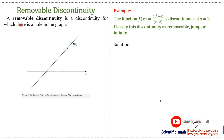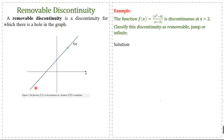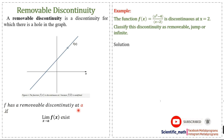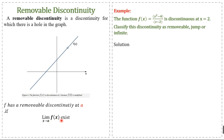Removable discontinuity: a removable discontinuity is a discontinuity for which there is a hole in the graph. If we have some function f(x) and the graph has a hole, that shows a removable discontinuity. The definition is: f has a removable discontinuity at a if the limit of the function as x approaches a exists.